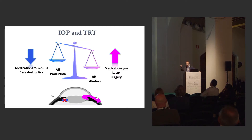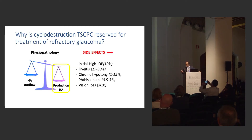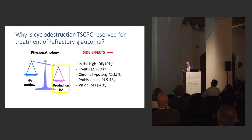As you know, we can reduce pressure either by decreasing production or by increasing evacuation of aqueous humor. We usually use cyclo-destruction as an end-stage procedure because of the rate of complications and side effects, including uveitis, chronic hypotony, and the high risk of phthisis and vision loss.